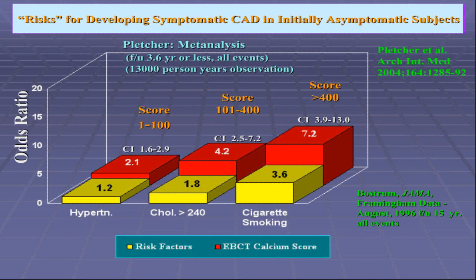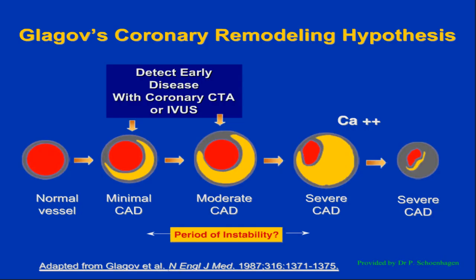Now the real question is: what about the plaque that hasn't quite gotten there yet — before it calcifies, the soft plaque? Calcification happens sometime after the stenosis may already start appearing. So what happens in the early days before plaque calcifies? The only way to look at that today is really with either intravascular ultrasound or CTA.